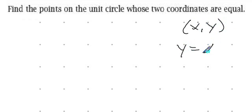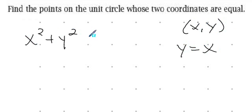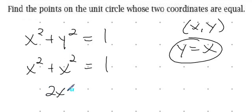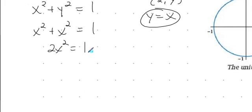Sometimes we're asked to find the points on the unit circle whose two coordinates are equal. When the two coordinates are equal, we're saying that y equals x — they're equal to one another. Going back to the equation of a unit circle, x squared plus y squared equals one, we can use substitution: since y equals x, we get x squared plus x squared equals one. We're trying to find where x and y are equal to one another, and this simplifies to two x squared equals one.